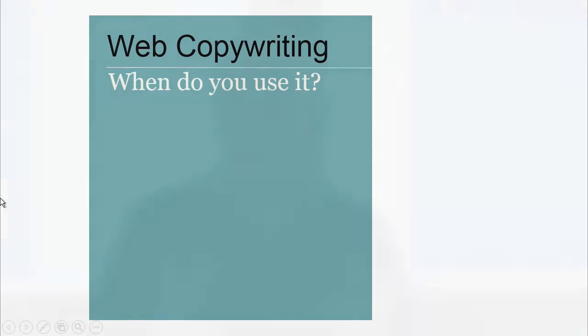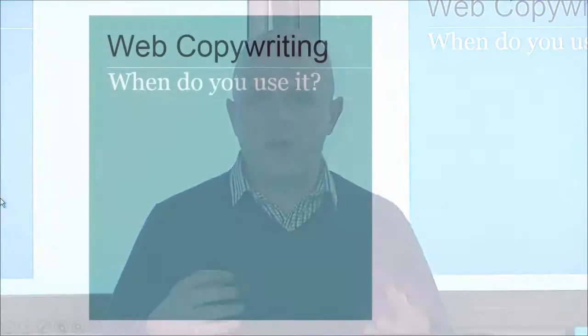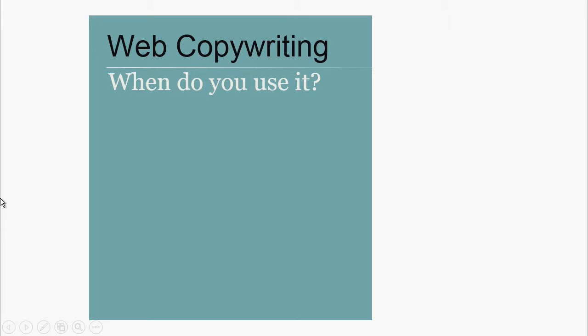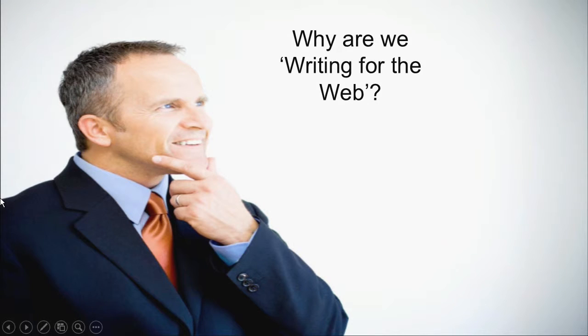So we've thought about what web copy is, we've thought about why our visitors are so impatient, and we understand that it's such an important thing. Let's start then thinking about how we build this into our marketing funnel and our marketing systems. The starting point, as with pretty much everything in terms of marketing, is to be clear — what are we trying to achieve?